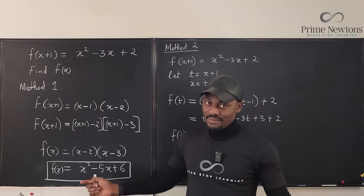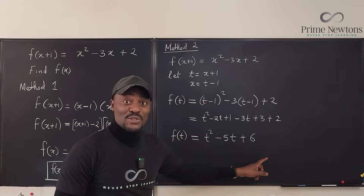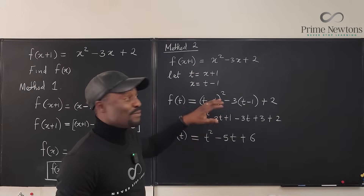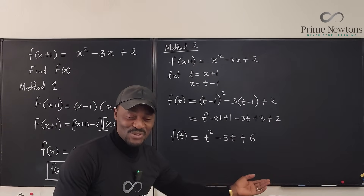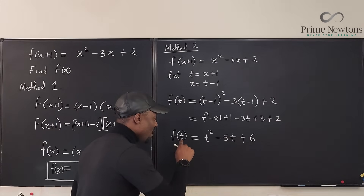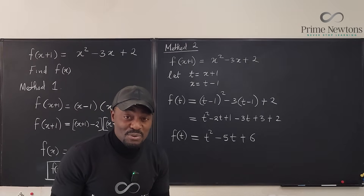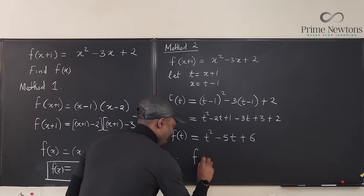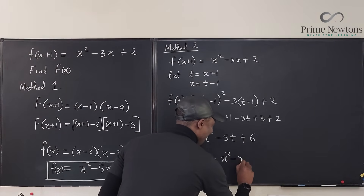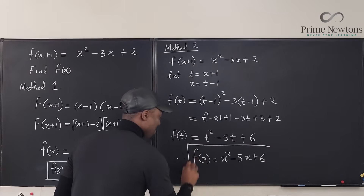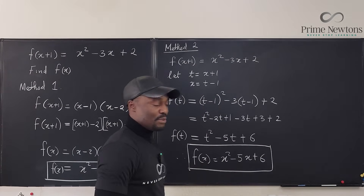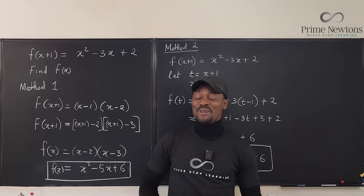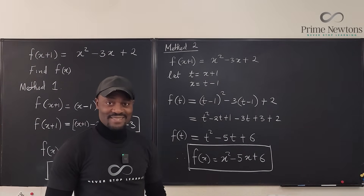It doesn't matter what letter you use as your substitution. We used T because we already used X. Remember, what's inside F is just the input — the independent variable could be any variable. Therefore, F of X equals X squared minus five X plus six. This is an input; we could have used any letter. Never stop learning — those who stop learning stop living. Bye-bye.